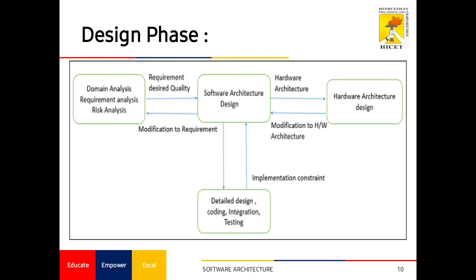In this design phase, a diagram shows how detailed design and hardware architecture analysis come together to produce a good software design. There are three phases: domain analysis, requirement analysis, and risk analysis, which collectively accumulate the requirement process. This also includes hardware architecture design — identifying which hardware devices should support the software architecture — as well as detailed design covering coding, integration, and testing.